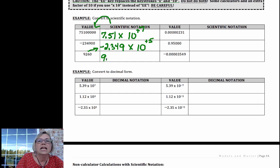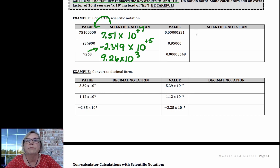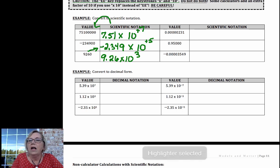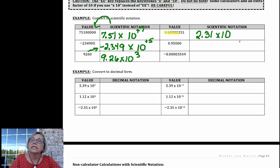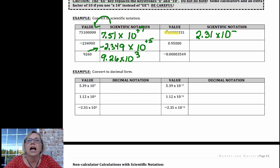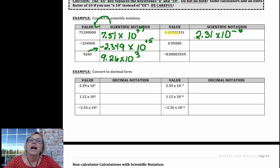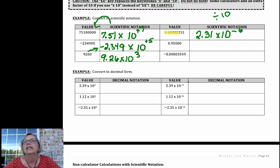9.26 times 10 to the positive 3, because I went over 1, 2, 3. Now look at this small number — all those zeros are telling me how big the number is. So I write 2.31 times 10. I know it's a small number, less than 1, so I'm going to have a negative power. I count over 1, 2, 3, 4, 5, 6. That means if I took 2.31 and divided by 10 six times, I would get my value.